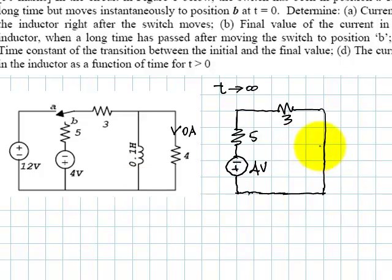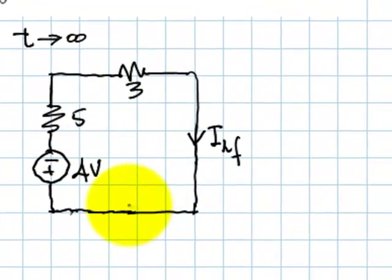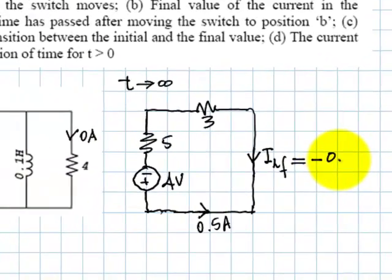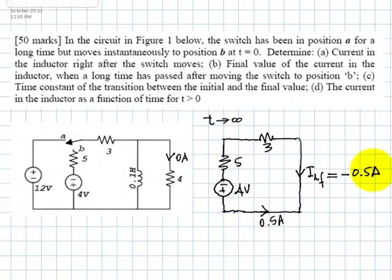We need to compute this current, the current in the inductor at infinity, the final value of the current of the inductor with that assumed polarity, which is the same one we established at the beginning of the exercise. What is the current in this circuit? This is a DC circuit. The current is going to be flowing like this, counter-clockwise, and it will be 4 over 8, half an amp. But the assumed polarity of this one dictates that this current is negative half an amp. And that is the answer to part B of this exercise.